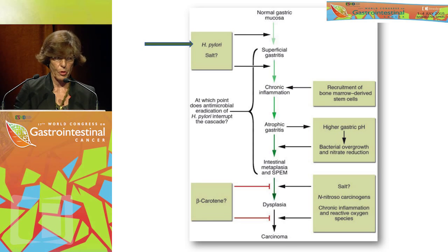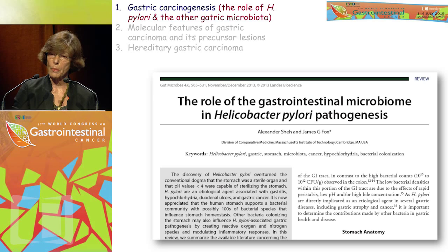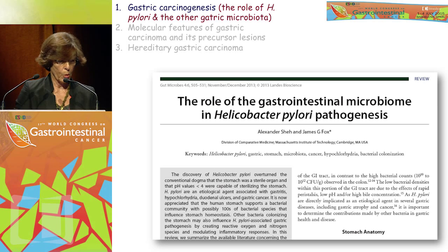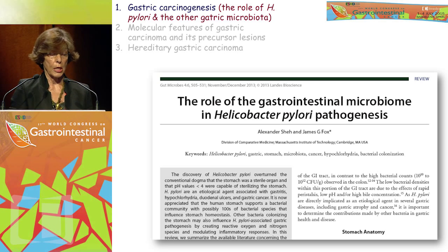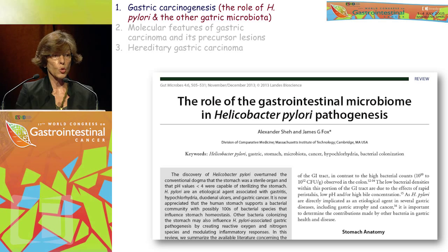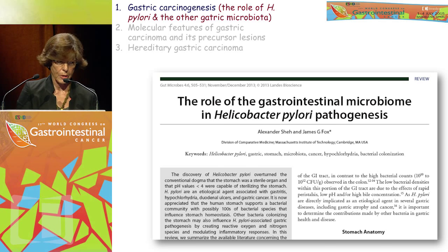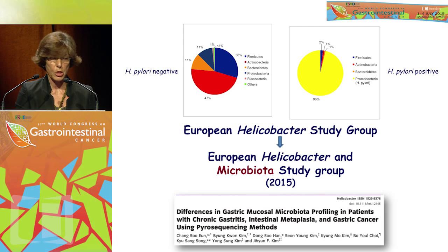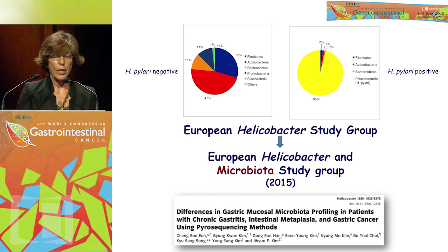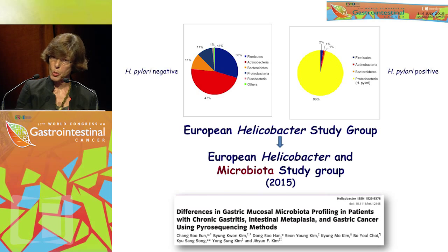When you think about the major etiological role in gastric cancer, which is still H. pylori besides diet, you also have to think that there is much more in the stomach. The trend today is to consider the role of the microbiome, which can encompass H. pylori but can also be devoid of it. If H. pylori is present, it becomes the most prevalent microorganism, but if not, there is a variety of microorganisms whose colonization consequences can be quite different.